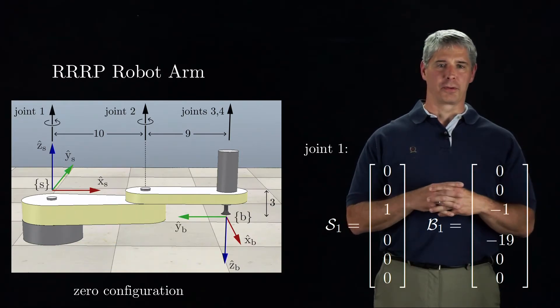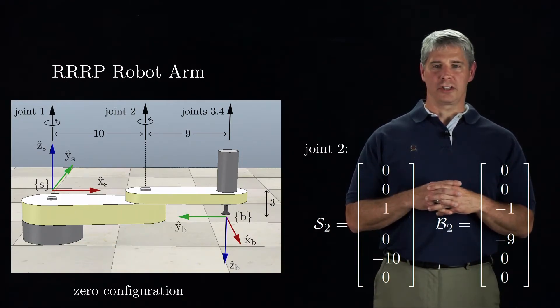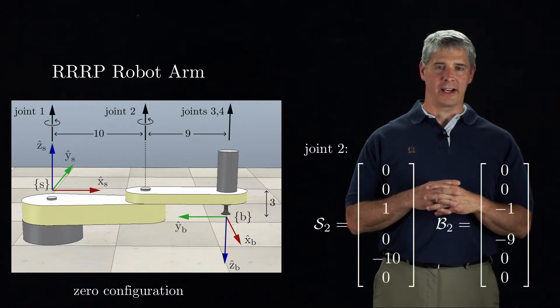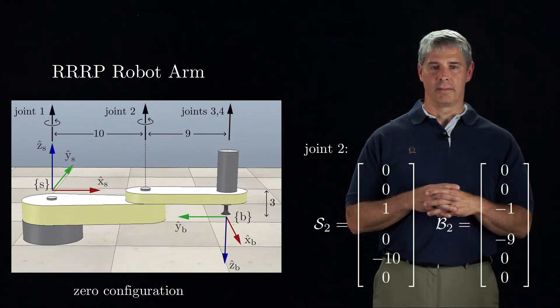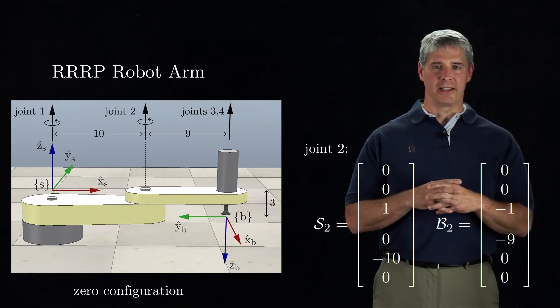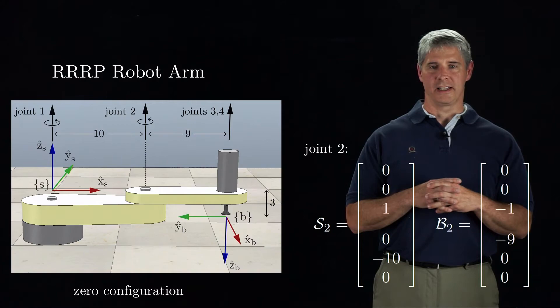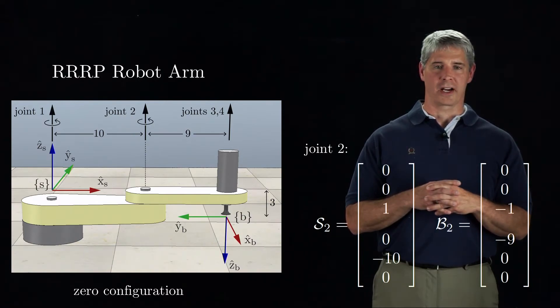Now let's go faster through the rest of the joints. Joint two's axis is aligned with the S-frame z-axis, so the angular component of the S-frame screw S-2 is [0,0,1]. Unit angular velocity about this axis induces a linear velocity at the S-frame origin of 10 units in the minus-Y-S direction.